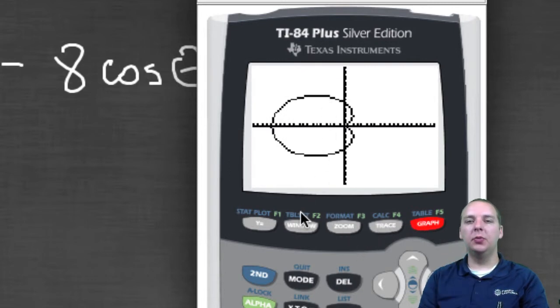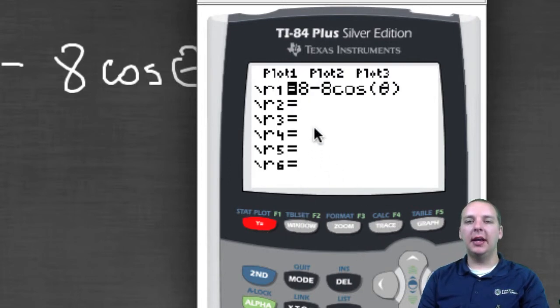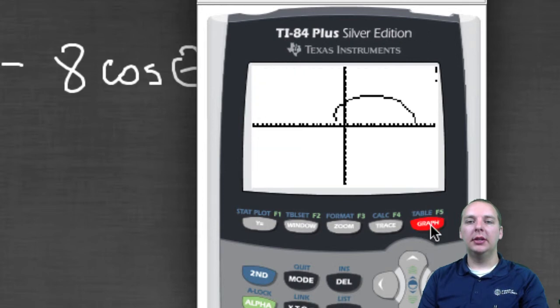So like here's a cardioid, I've zoomed way out. But now I see how manipulations done to this function can affect the graph. For example, if I change the minus to a plus and graphed it, you'd see it flips around the other direction.